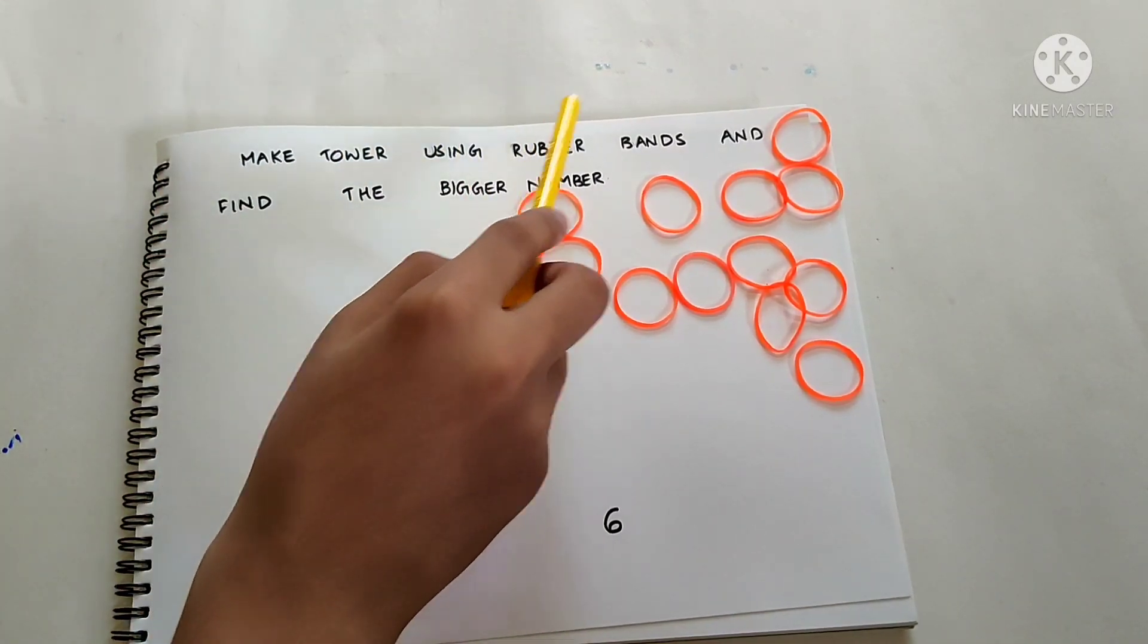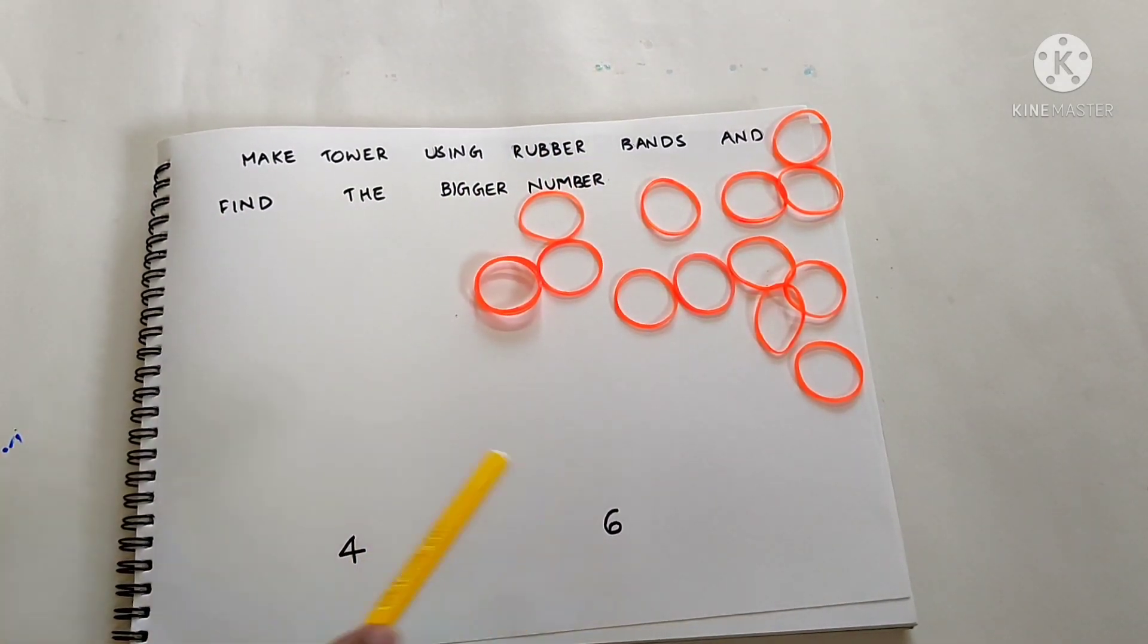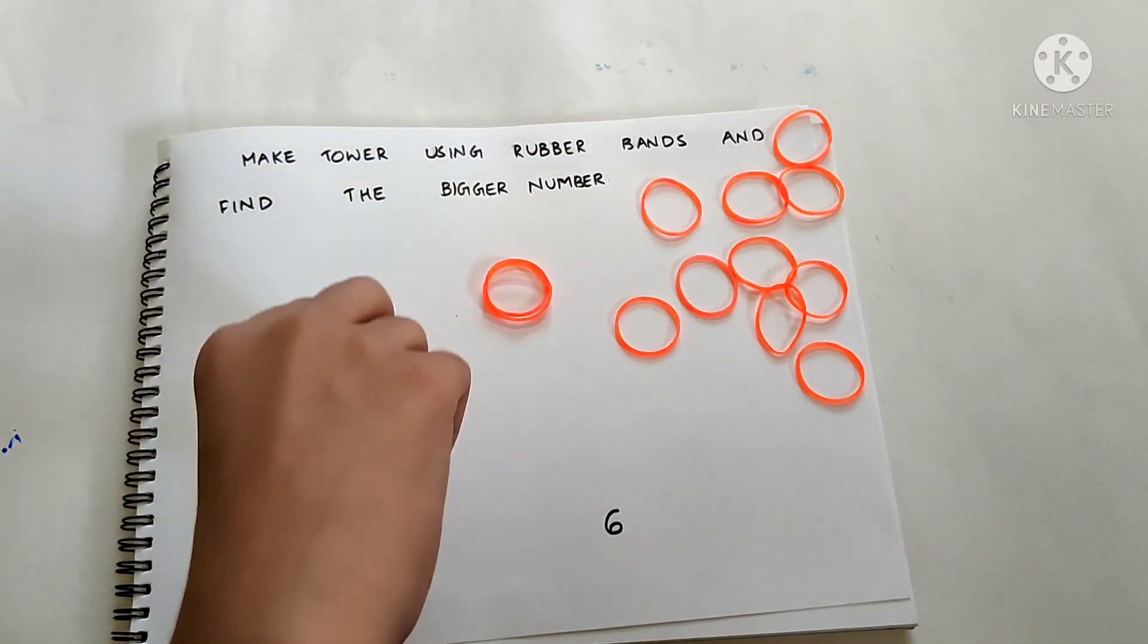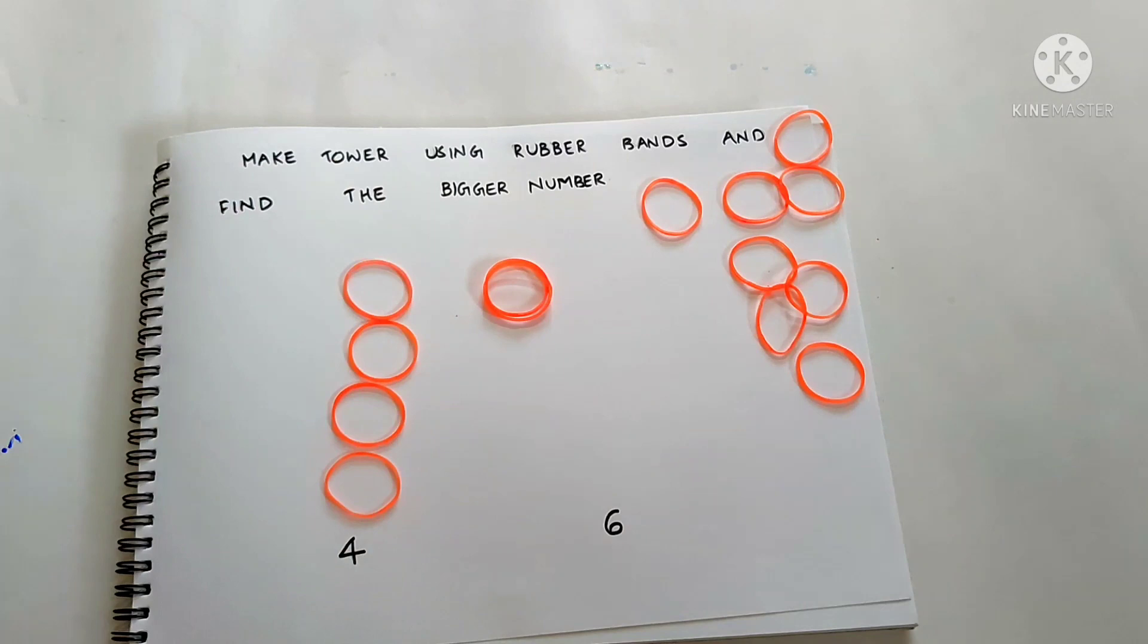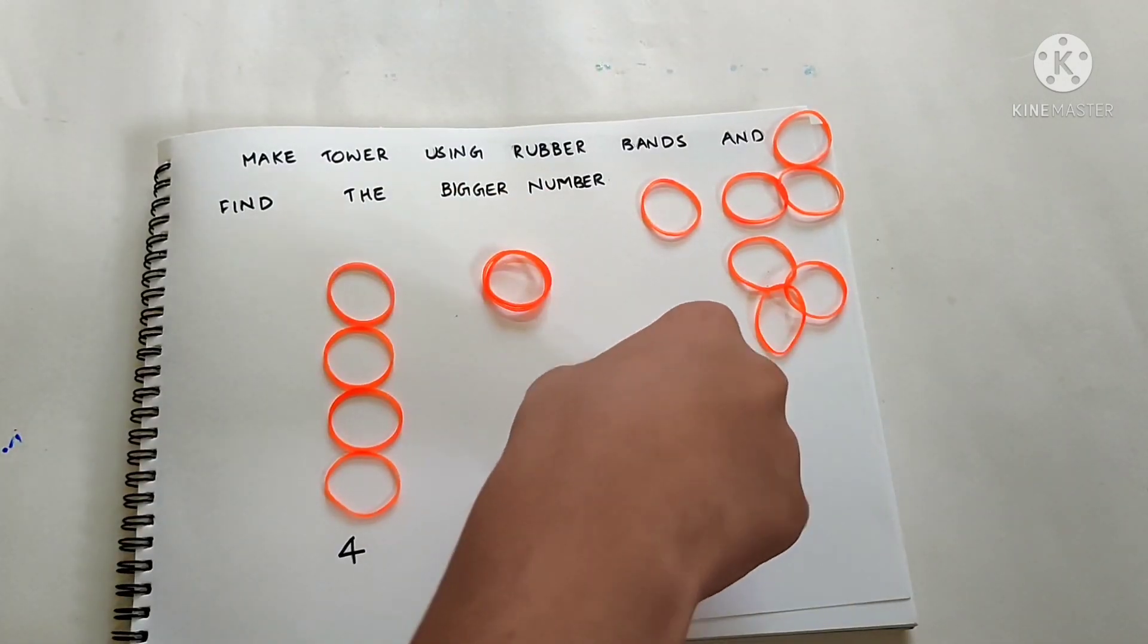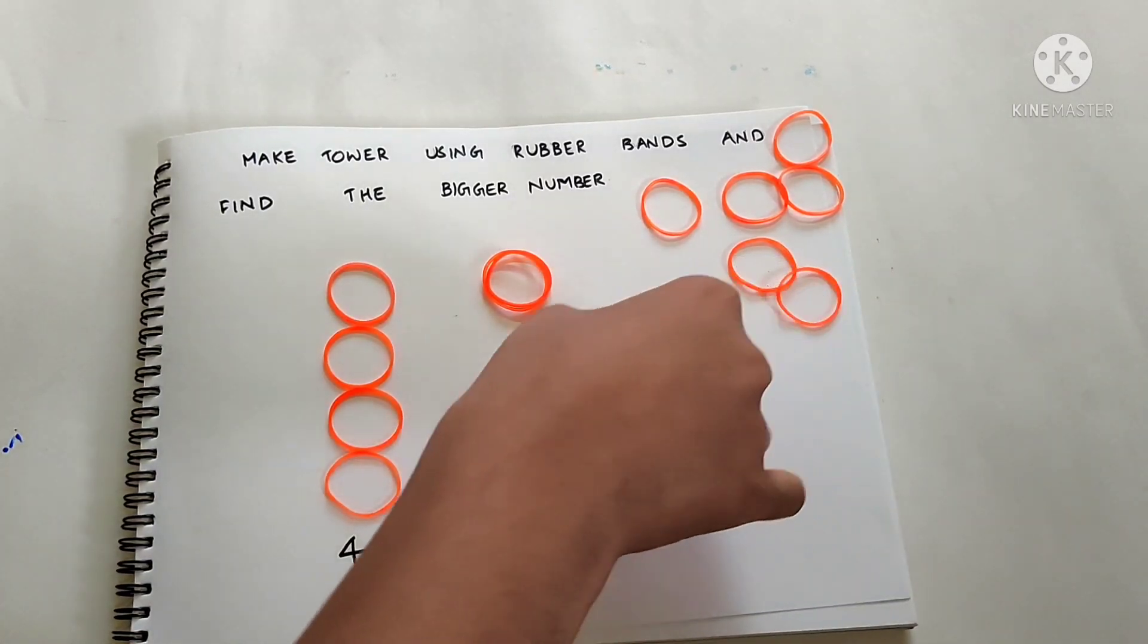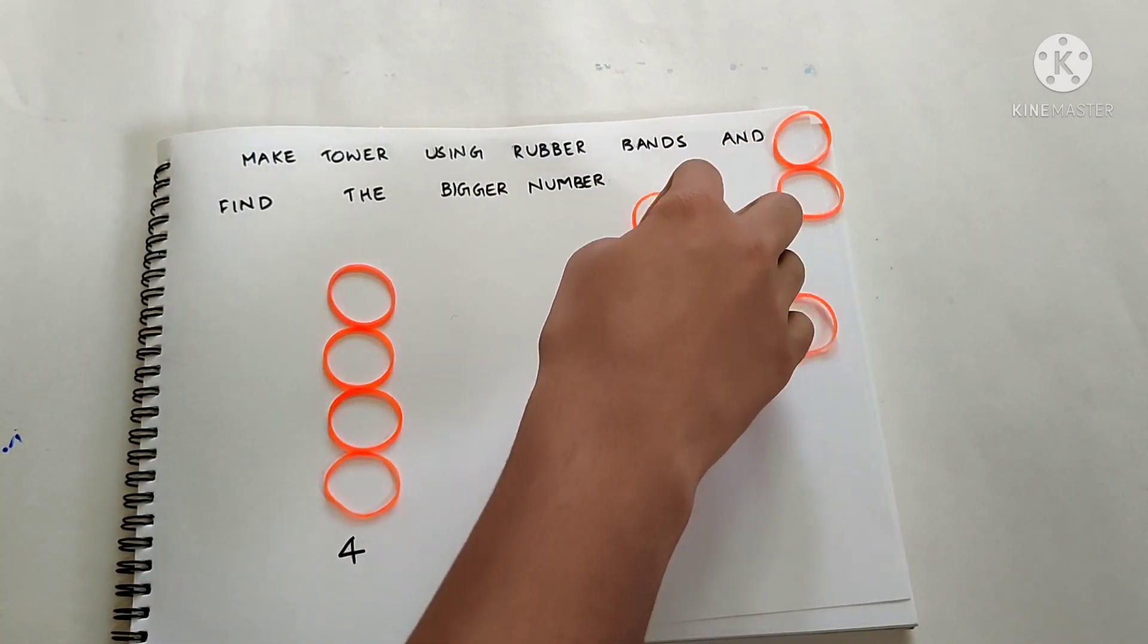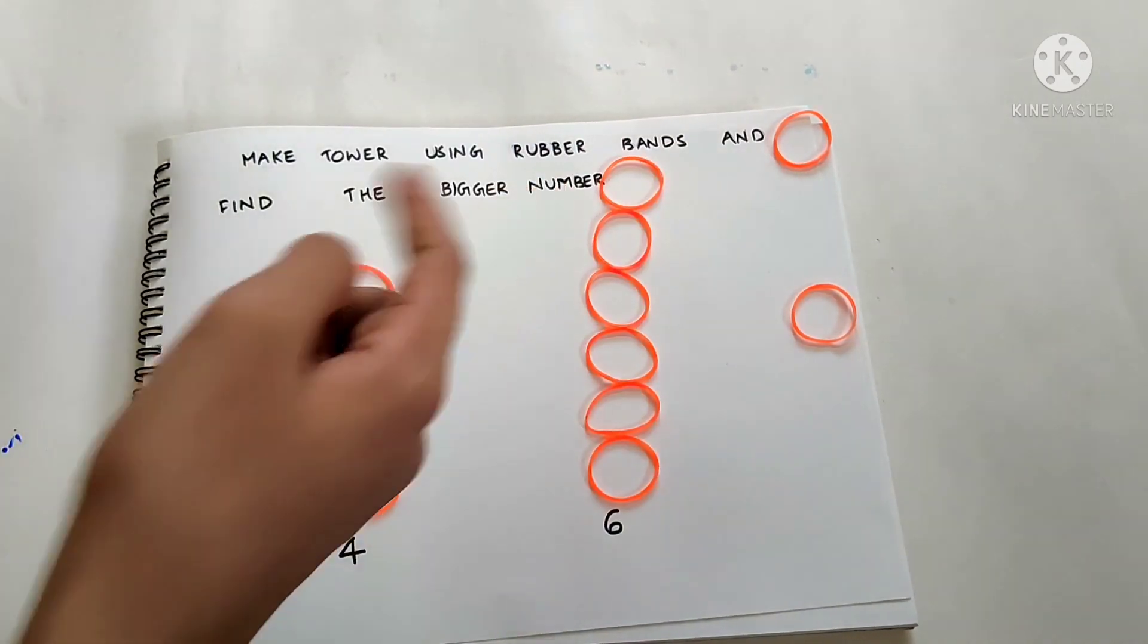Make tower using rubber bands and find the bigger number. Four, six, four. One, two, three, four, six. One, two, three, four, five, six. Six is the bigger number.